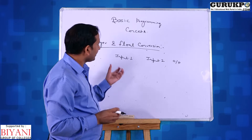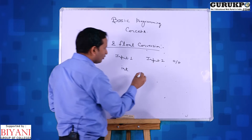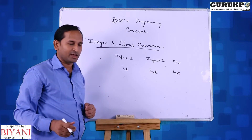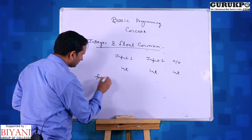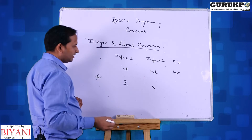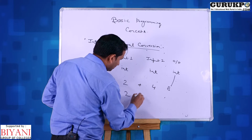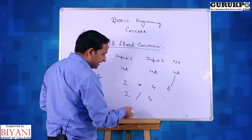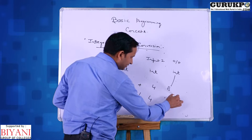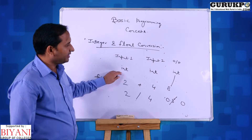Here we are discussing integer and float convergence. Suppose the first input is integer and the second input is also integer — then the output will always be integer in C programming language. For example, 2 and 4 are both integers. If we add 2 plus 4, it gives 8, which is integer. But 2 divided by 4 gives 0.5 in mathematics; however, in C programming, the decimal part is always truncated in case of integer-integer operations, so it gives 0.